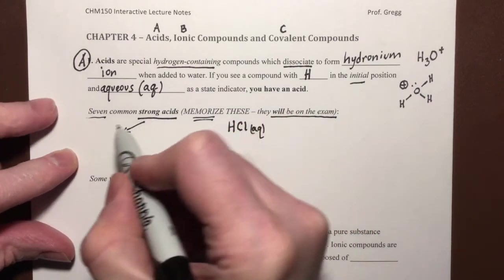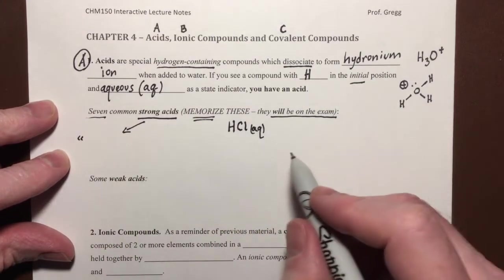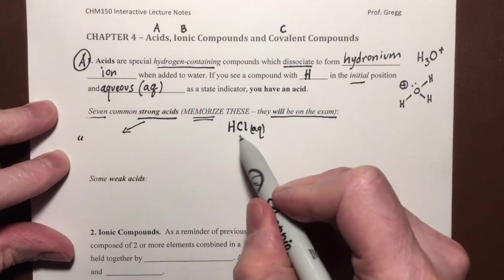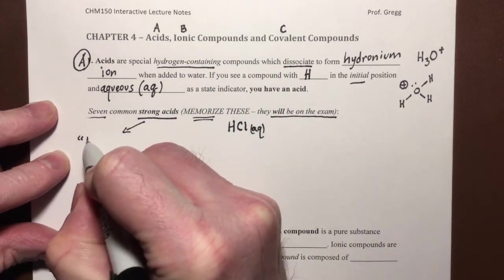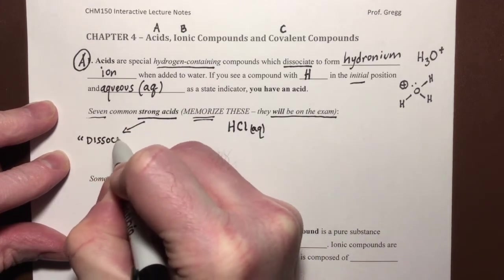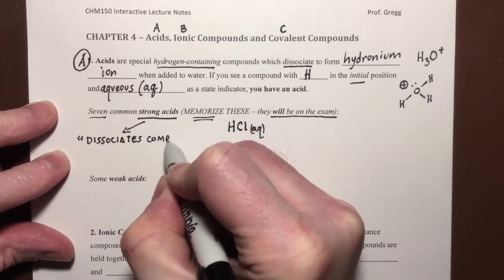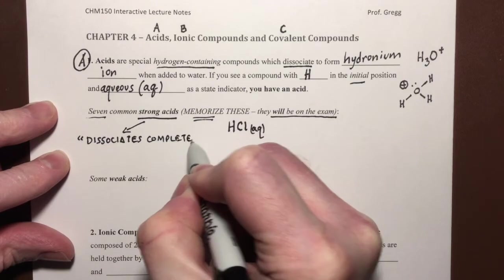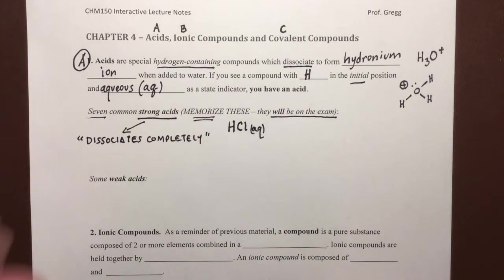So first of all, what does strong acid mean? Strong acid means that when we put it in water, every one of those molecules gives up its hydrogen. So we say it dissociates completely. That's what a strong acid means, it dissociates completely.